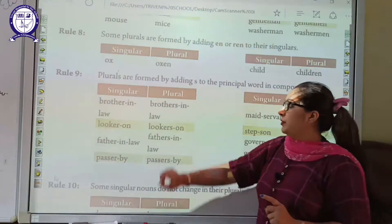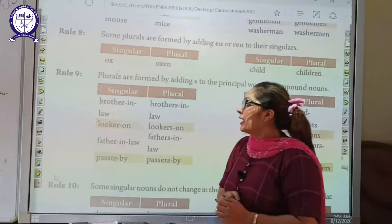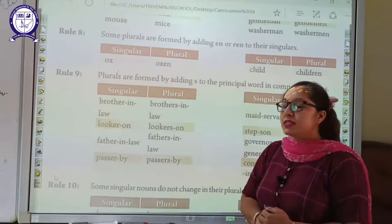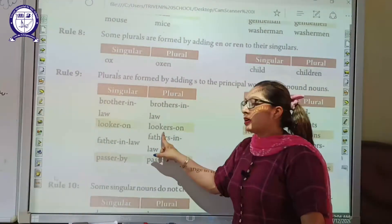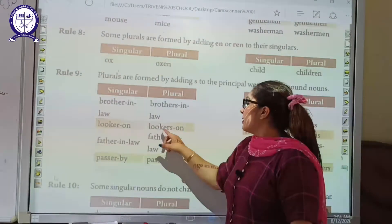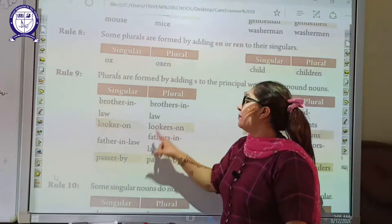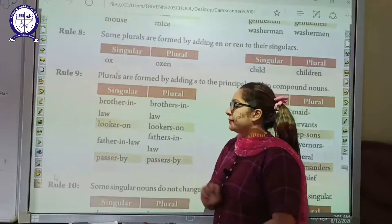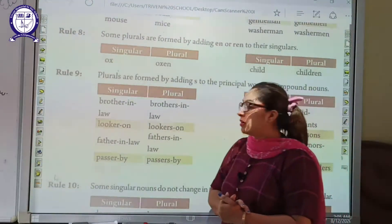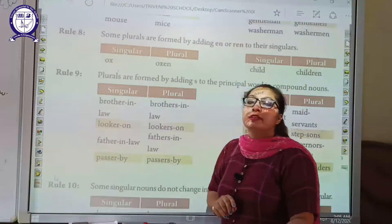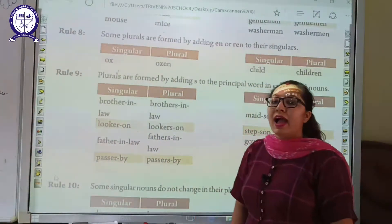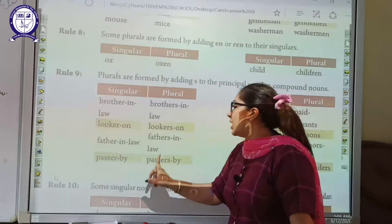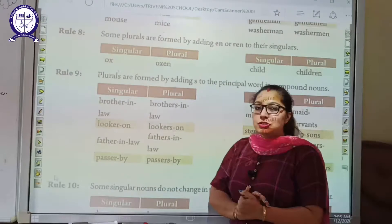In the second example, the principal word is 'locker,' so we add S to it and it becomes 'lockers-on.' For the third word, 'father-in-law,' our principal word is 'father,' so we add S to father and it becomes 'fathers-in-law.' Have you understood this, students? Now we go to rule number 10.